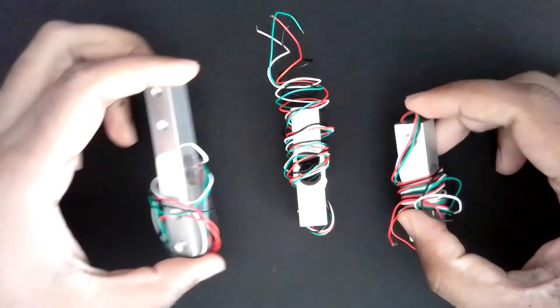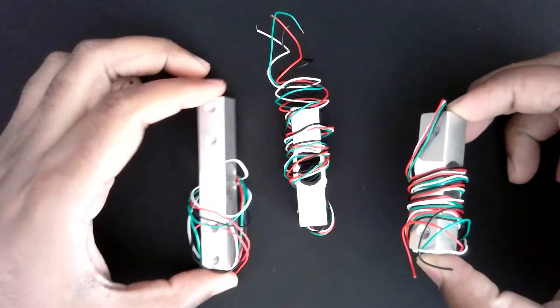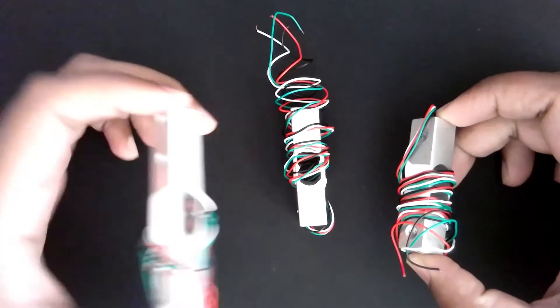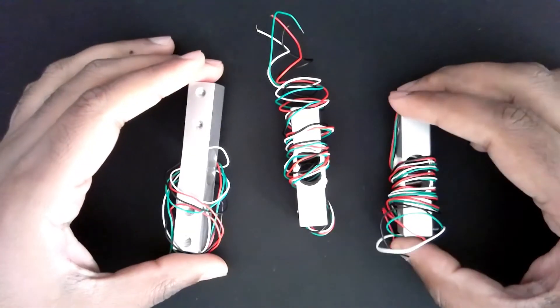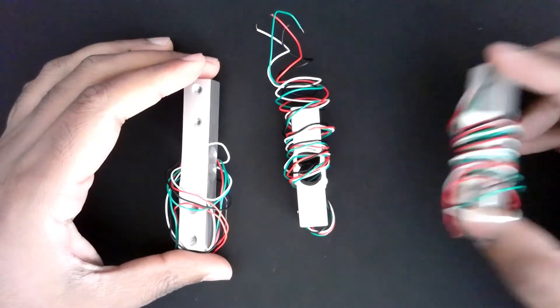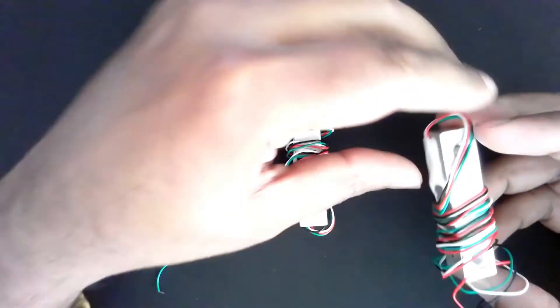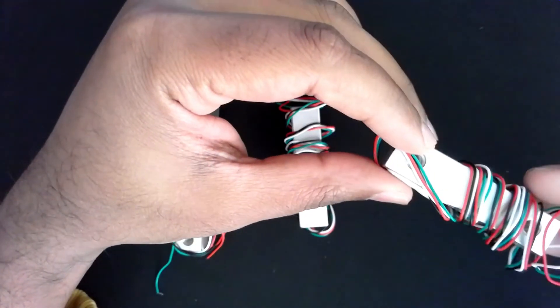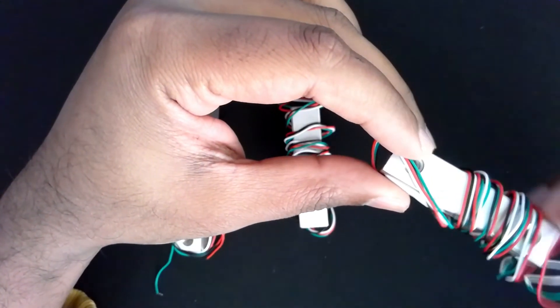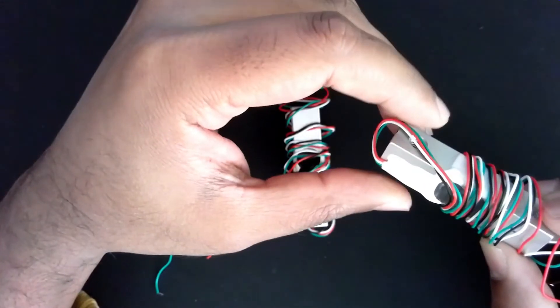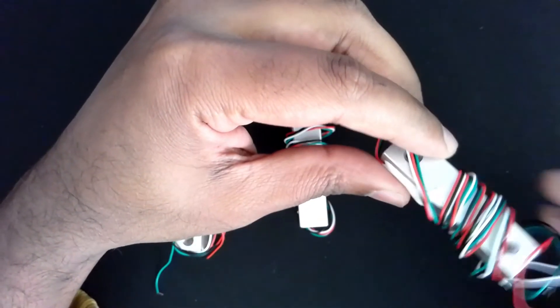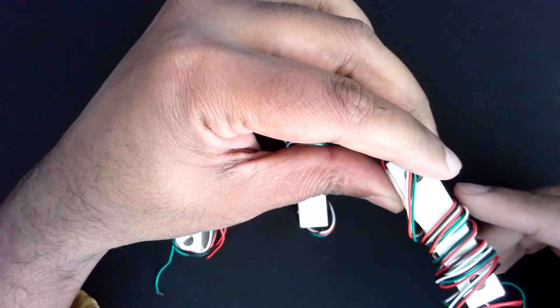One of them is we call these load cells, which give an analog reading. An analog reading is a continuous reading and these measure weight. Generally the weight or the force that's acting on this or the load that's acting on this is basically measured as a voltage.